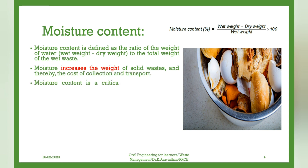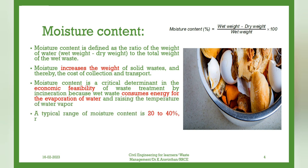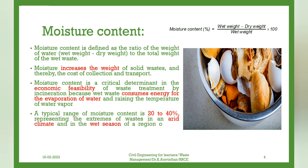Moisture content is a critical determinant in the economic feasibility of waste treatment by incineration, because wet waste consumes energy for the evaporation of water and raising the temperature of water vapor. A typical range of moisture content is 20 to 40%, representing the extremes of wastes in an arid climate and in the wet season of a region of high precipitation. Values greater than 40% are not uncommon.